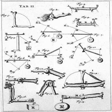Comparative biomechanics is the application of biomechanics to non-human organisms, whether used to gain greater insights into humans as in physical anthropology, or into the functions, ecology and adaptations of the organisms themselves. Common areas of investigation are animal locomotion and feeding, as these have strong connections to the organism's fitness and impose high mechanical demands.